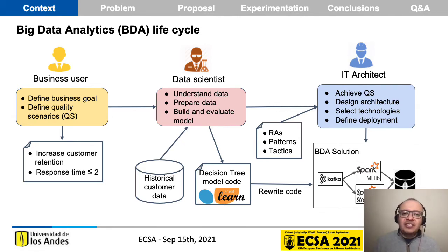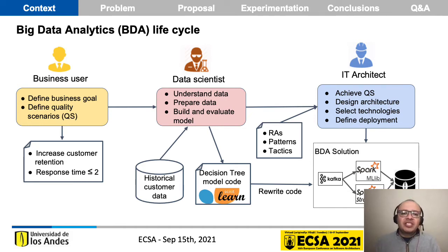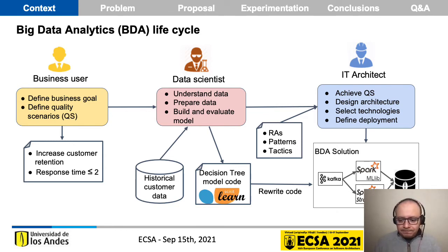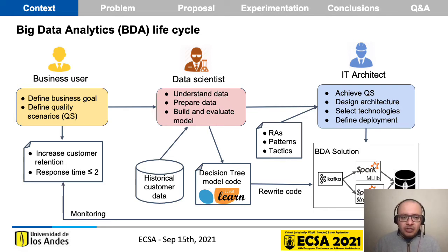In the last domain, the IT or solutions architect has to take into account reference architectures, patterns, tactics, and other architectural mechanisms to achieve the expected quality scenario. The IT architect has to translate or rewrite the code in order to publish or deploy the model in a productive environment based on architectural decisions — for example, translating a Scikit-learn program to a Spark ML program. Then, with the solution running in production, we validate whether the expected quality scenario is achieved using monitoring of the relevant metrics.